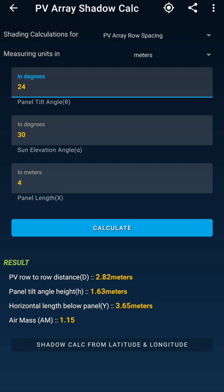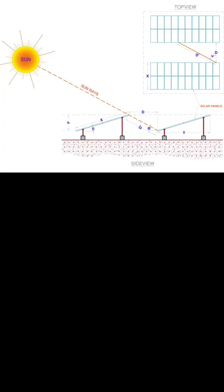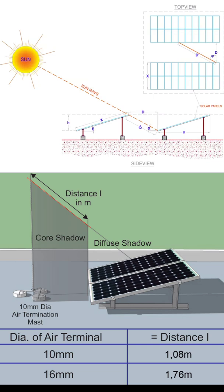To understand all these details, there is an option below in the app that provides a diagram explaining all the values. In the diagram you can see a side view showing how the sun's elevation angle is defined from the lower edge of the module, and the distance and angle between the two arrays that determines your row-to-row spacing.